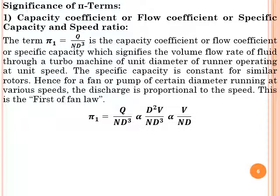According to π1 = Q/(ND³), discharge Q is measured in m³/s. Since discharge equals area times velocity, area is proportional to D² and velocity V relates to ND. After simplifying, D² in numerator and D³ in denominator cancel, giving the expression V/(ND), which reduces to V/U.